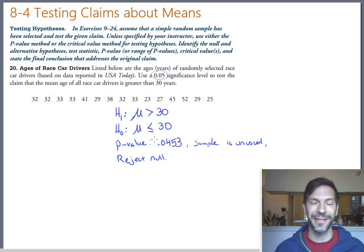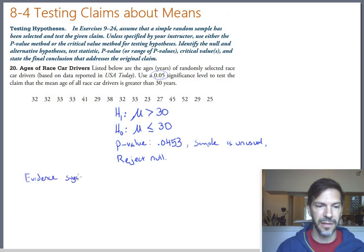We need to finish off by writing a sentence that says what does it mean to reject the null, what does that say about race car drivers. We're rejecting the null, which means we're going with the alternative. You could structure your sentence to say either one of those things. You could say I reject that the average age of race car drivers is less than or equal to 30, which seems like a double negative, so maybe I'll just say the evidence suggests that the average age of race car drivers is greater than 30.